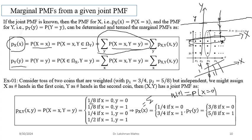The conditional PMF, written as p_{Y|X}(y|x), expresses the probability that Y observes value small y, given that X has already been observed to take value small x. The vertical bar denotes 'given'. This is the conditional probability mass function (conditional PMF), and its formal definition will be discussed next.